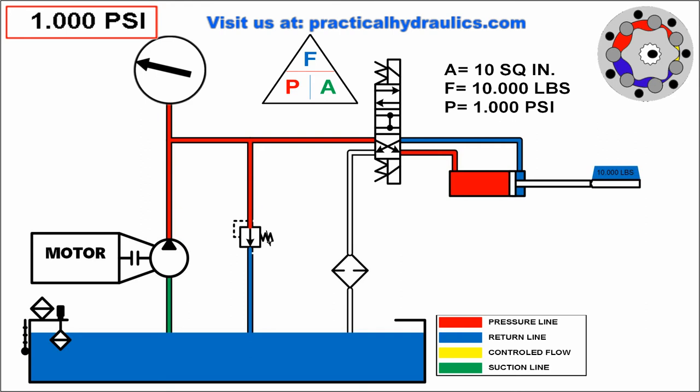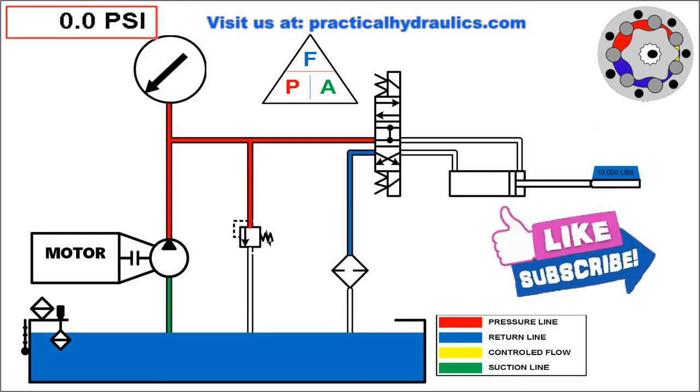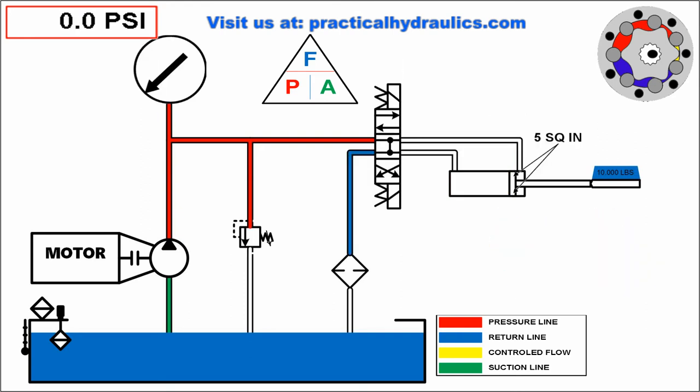During retraction, the affected area is only 5 square inches. This increases the required pressure to 2,000 psi needed to retract the load.